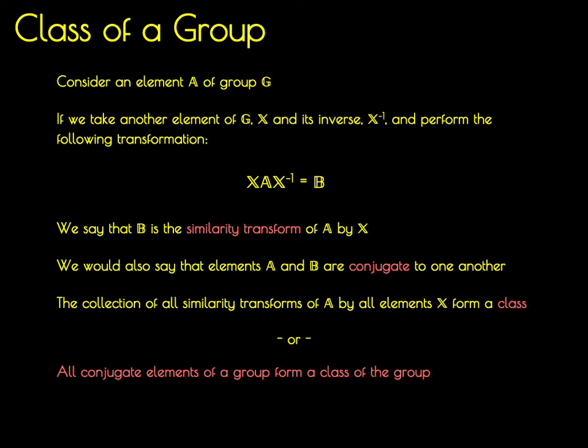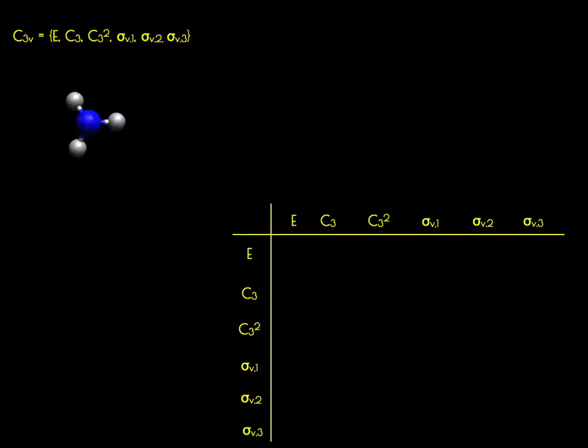We're now going to use that relationship to determine the classes of the C3V point group. C3V contains E, a C3, a C3 squared, both of those along Z, and then three mirror planes that contain the Z axis.